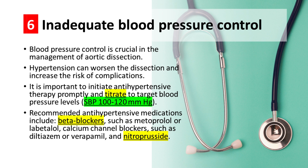Pitfall number 6: Inadequate blood pressure control. Blood pressure control is crucial in the management of aortic dissection. Hypertension can worsen the dissection and increase the risk of complications. It is important to initiate antihypertensive therapy promptly and titrate to target blood pressure levels. Recommended antihypertensive medications include beta blockers such as metoprolol or labetalol, calcium channel blockers such as diltiazem or verapamil, and nitroprusside.